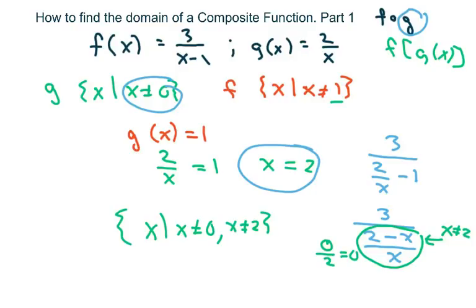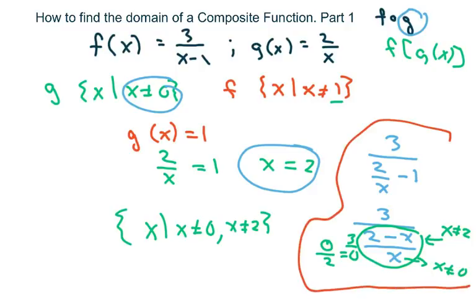3 divided by 0 is undefined. And if x equals 0, the denominator would be undefined as well — you can't have 3 divided by something over 0. That's why the procedure works. If you don't want to always compose the function, just go through the procedure steps.